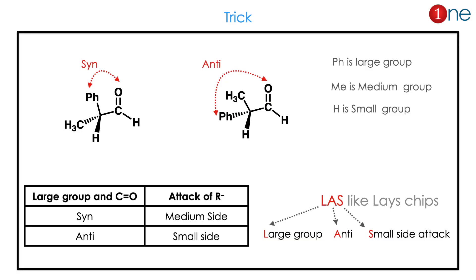Instead of finding the detailed mechanism, an easy trick can be used. You have to find the large group — which is phenyl here — and see whether it is syn or anti. If the large group is syn, the attack will be on the medium side. If the large group is anti, the attack will be on the small side.